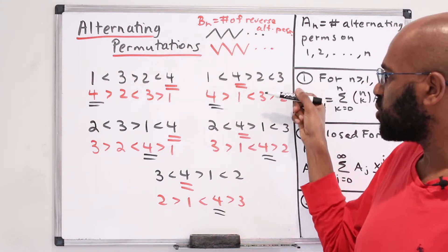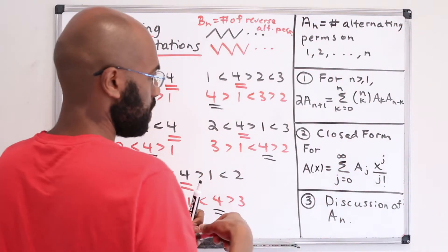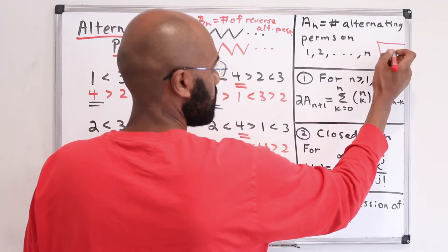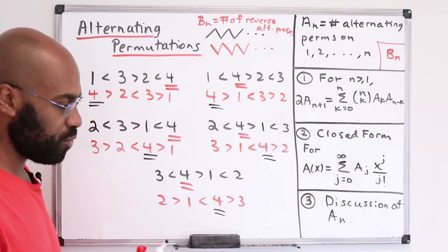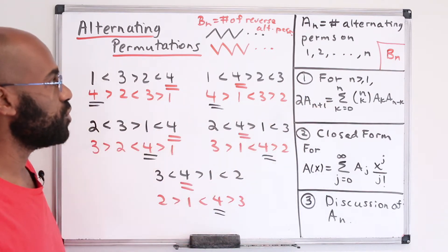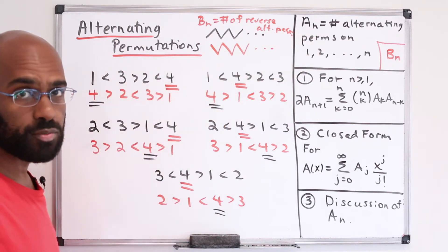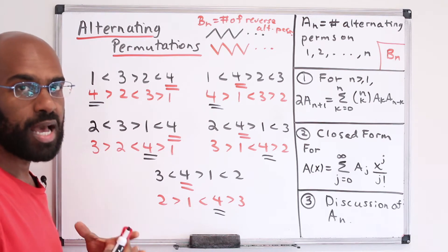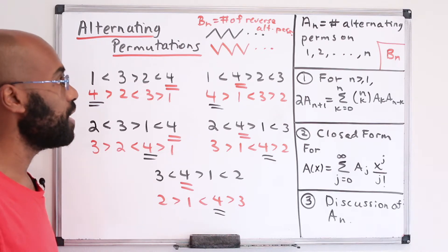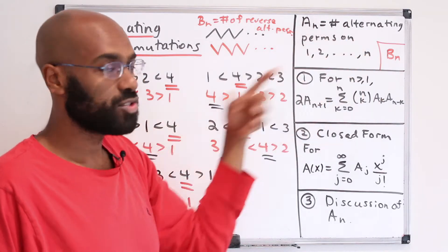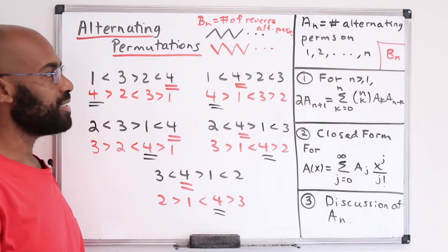Because of the bijection we talked about earlier, the number of alternating permutations equals the number of reverse alternating permutations. So what we'll do to help us get toward our first goal — a recurrence relation for these a sub n's — is take a general alternating or reverse alternating permutation and decompose it into pieces. Together with the fact that these counts are the same, we can develop a recurrence. So let's go ahead and dive into that.